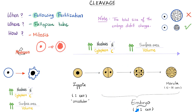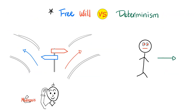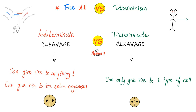We have two types of cleavage: determinate cleavage and indeterminate cleavage. To understand the difference, think about free will versus determinism. Free will says human beings are free to choose — you can go this way or any other way. Determinism suggests that you are determined by your genes, your environment, etc. — you're just going this way; it's not your choice. What does that have to do with biology of reproduction? A lot, actually.